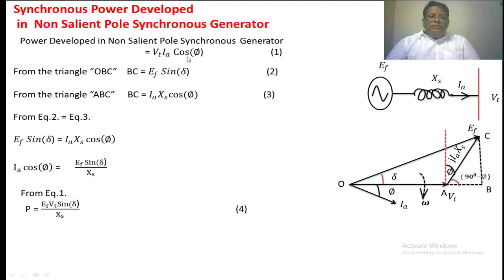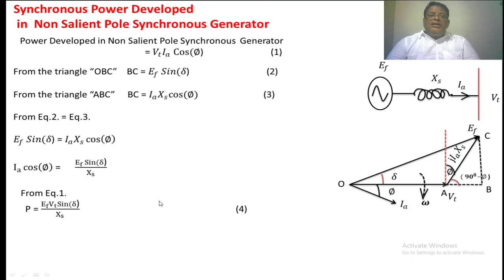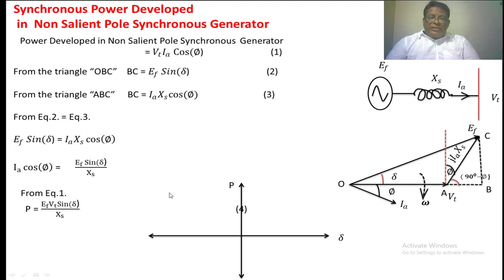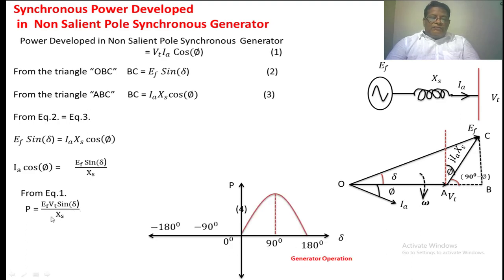Substituting into equation 1, in place of IA·cos(phi), we get the power delivered to the infinite bus as P = (EF·VT / Xs)·sin(delta). This is for the non-salient pole synchronous generator, i.e., the cylindrical type. Delta can vary from 0 to 180 degrees. We take delta on the x-axis from 0 to 90 to 180, and the power profile follows a sinusoidal shape with a maximum value of EF·VT / Xs.